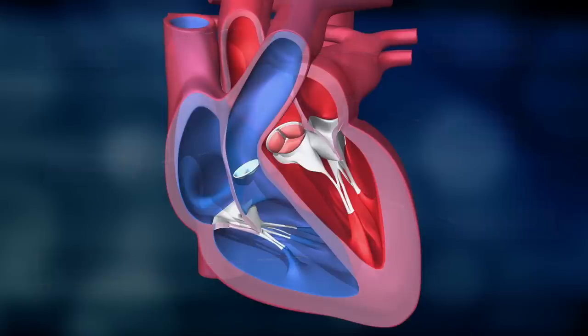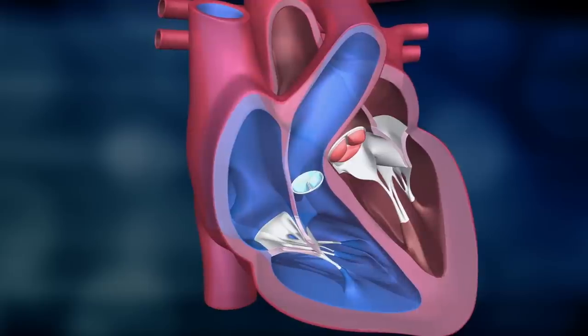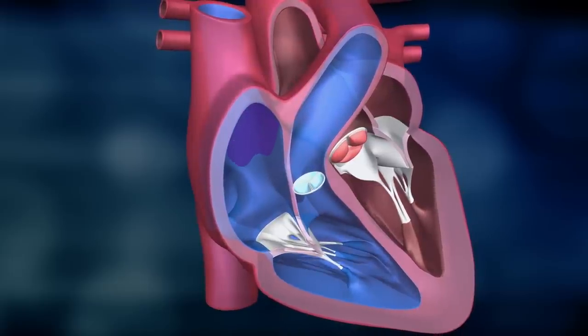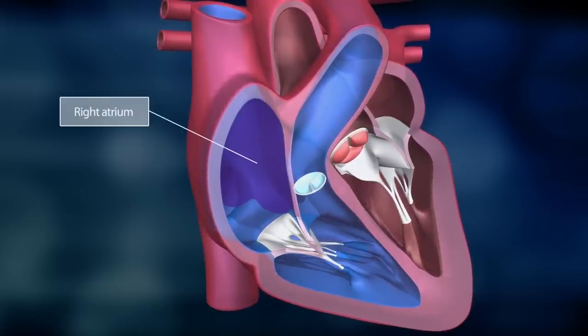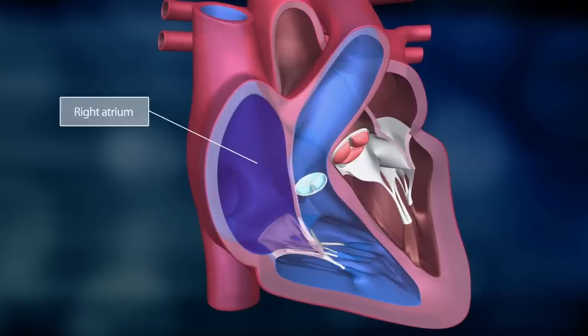The pumping cycle begins when oxygen-deprived blood returns from the body through the veins — the superior and inferior vena cava — and into the heart's right atrium. When the right atrium is filled with blood,